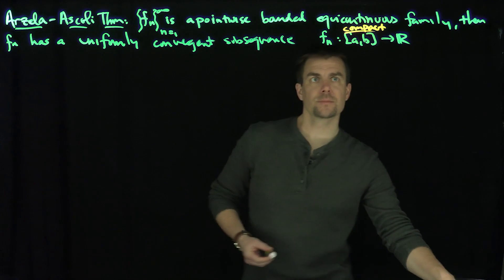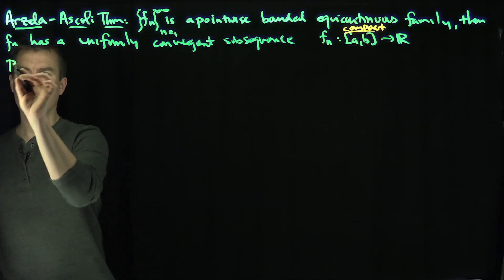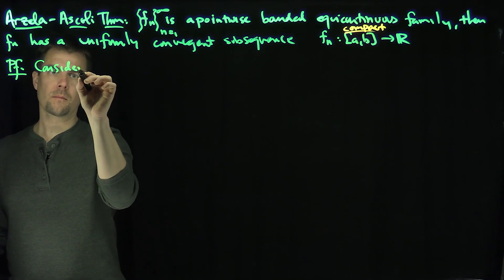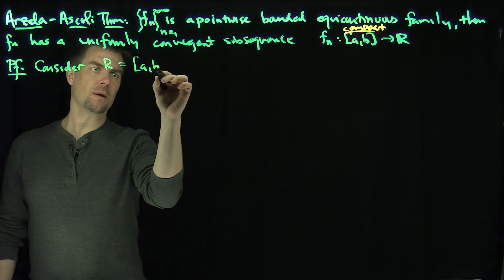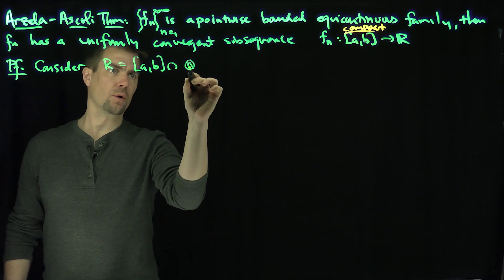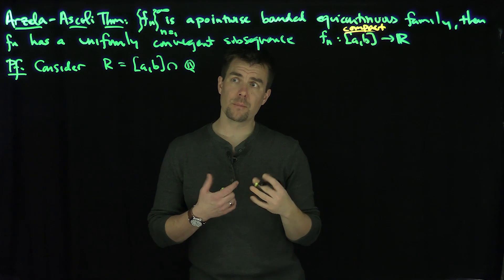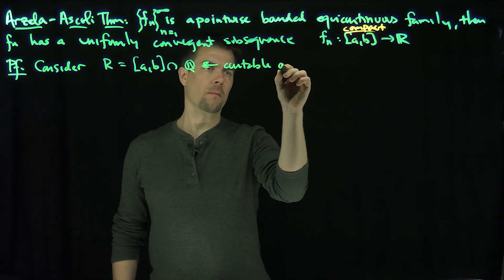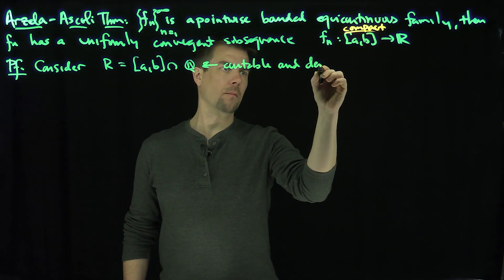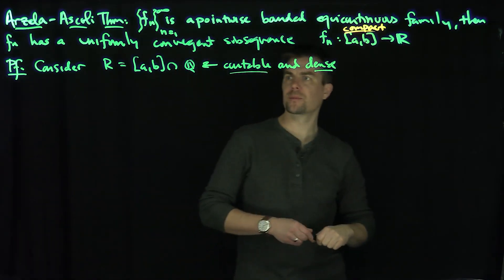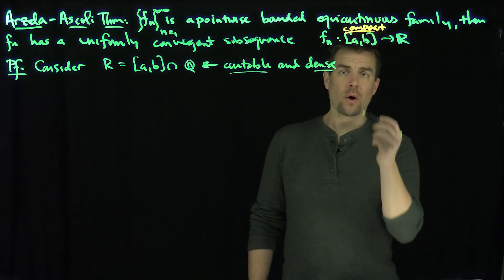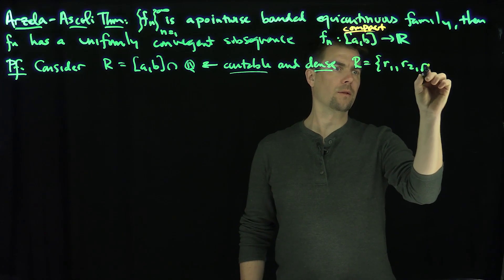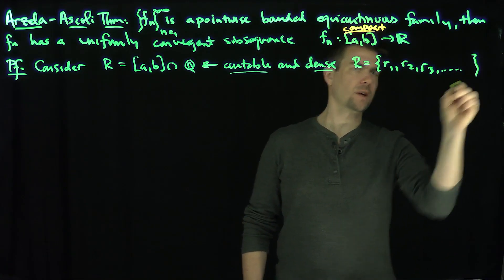All right, so how do we do this? Proof: consider R, which is the interval [a, b] intersect Q — all the rational numbers on the interval [a, b]. This is countable and dense; both of those are important. And so I'm going to write this set R as just R1, R2, R3, et cetera. So it's countable and dense.